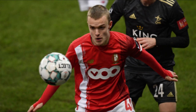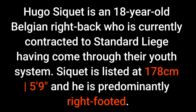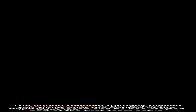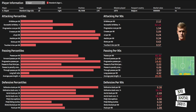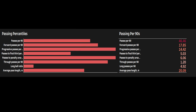The first player on Lee Scott's list is Hugo Secuert, 19 years old, who plays for Standard Liège in Belgium. Hugo Secuert is an 18-year-old Belgian right back who is currently contracted to Standard Liège, having come through their youth system. Secuert is listed at 178 centimetres — 5 foot 9 — and he is predominantly right-footed. The young Belgian full-back played 1,573 minutes in the Belgian top flight last season and has started this season as a regular part of the first team setup. Looking at his profile, we start to see a young player with certain similarities to Trent, although these are mostly in the attacking and passing sections. Secuert became an important player for his side with his ability to progress the ball forward effectively on the right side of the pitch.